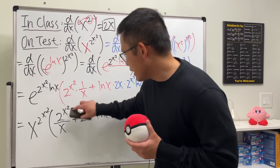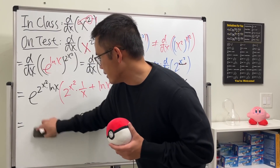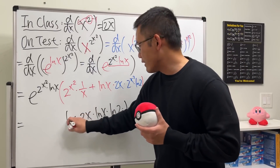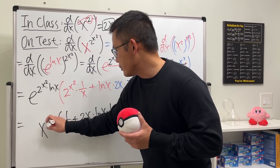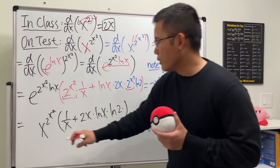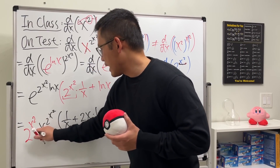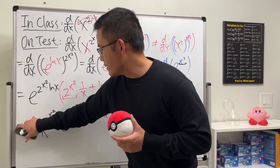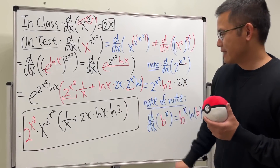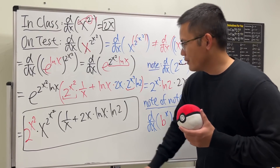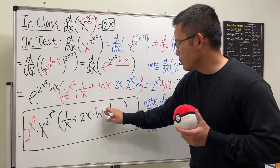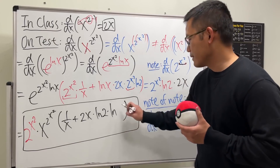We can actually factor out x^(x²) from both terms. So let's factor that to the front. Inside the brackets we have: 1/x from the first term, plus ln x · 2x · ln 2 from the second term. We like to put numbers before functions, so we can write ln 2 first. The factored final answer is: x^(x²) · [2^(x²)/x + 2x · ln x · ln 2].